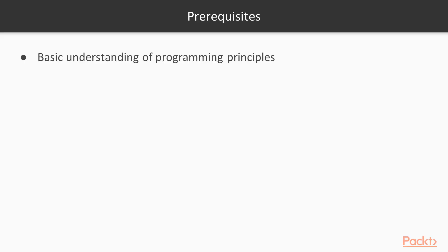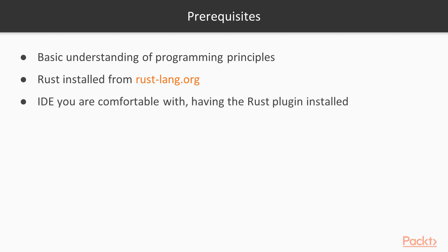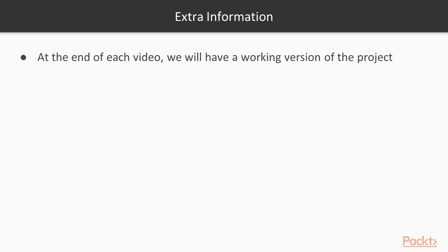For this course to be most effective, you should already understand basic programming principles. Some familiarity with Rust itself wouldn't hurt. You should have a recent version of Rust installed on your system, and the IDE of your choice should have a relevant Rust plugin installed and ready to go. At the end of each video where we work on our project, the project will be runnable. Please follow along and run the project yourself. Exploring and tinkering with each stage on your own is a valuable way to internalize details about what we discuss in the course.